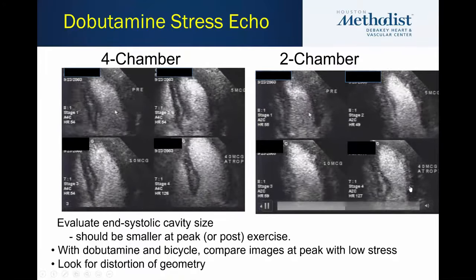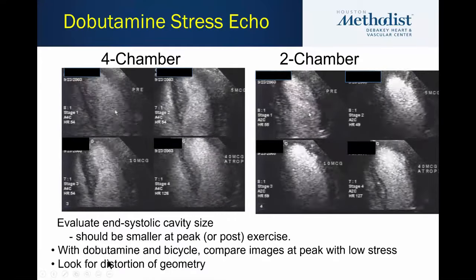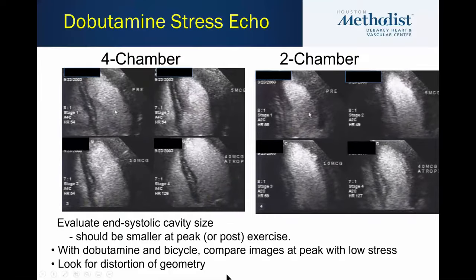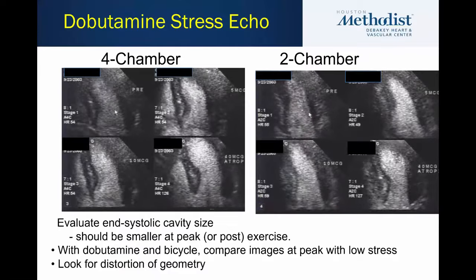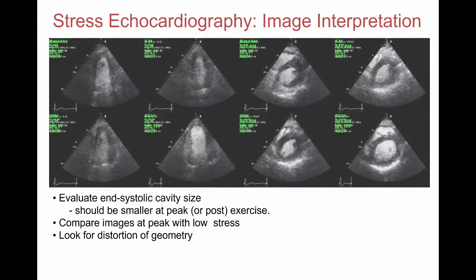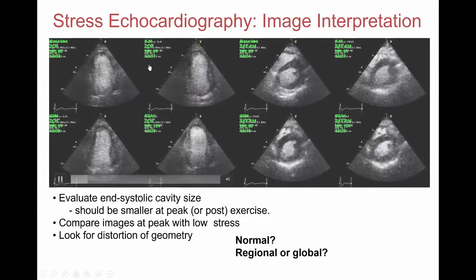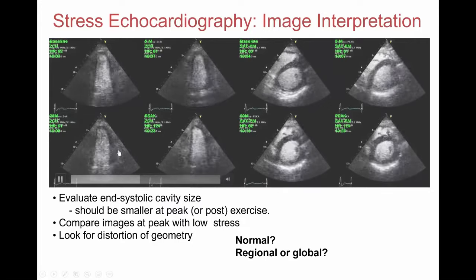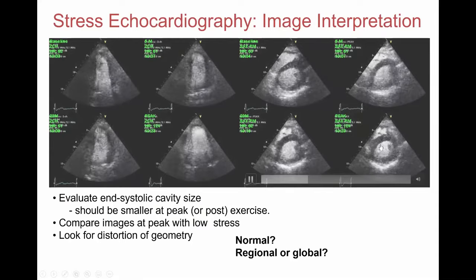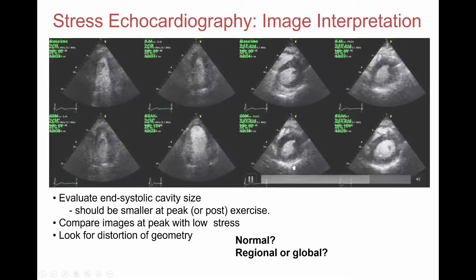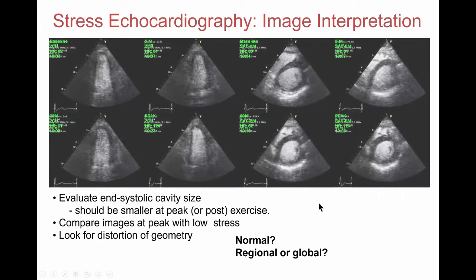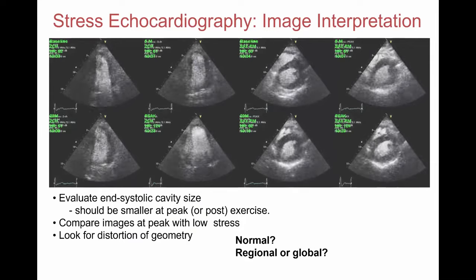With dobutamine, we look for cavity size in systole compared to diastole and distortion of geometry. The problem is that if the heart is relatively normal and small at rest, it can get very small with dobutamine, making it tougher to interpret wall motion. In a patient with a more global response, the entire cavity gets bigger at peak. This could be multi-vessel disease or left main, but it could also be some form of cardiomyopathy — it's a more global response. Until proven otherwise, you have to think of significant multi-vessel CAD or left main.